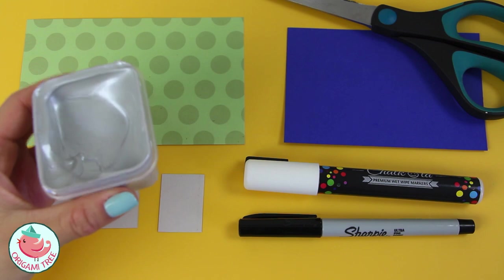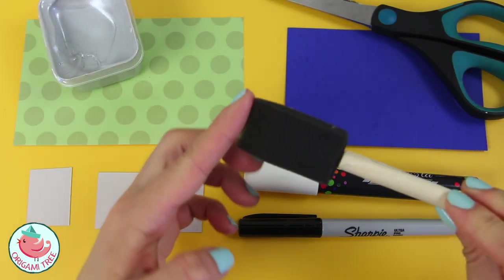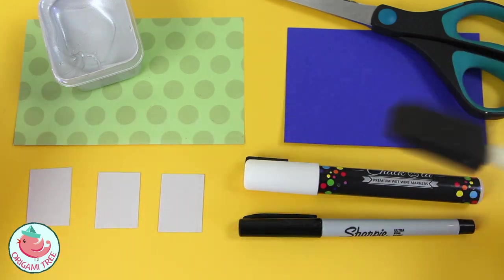some silver metallic paint, and also a paintbrush. So I recommend these paintbrushes that have the flat edge so that it's easier to paint on.